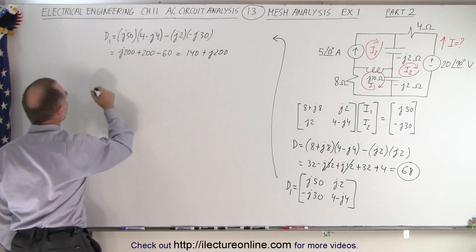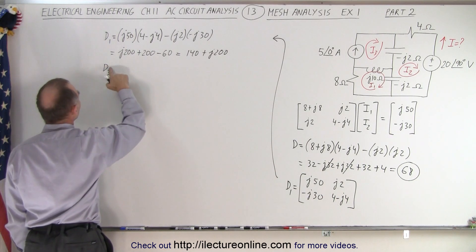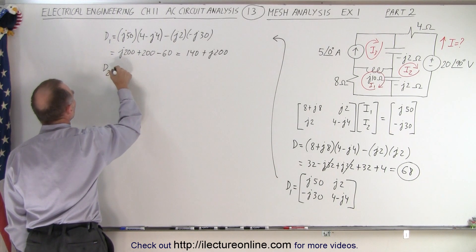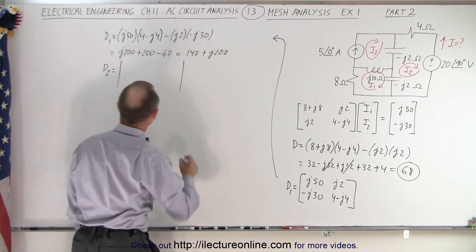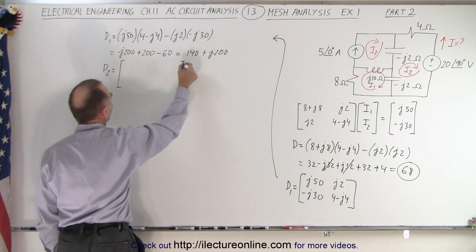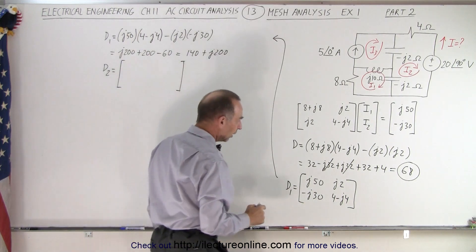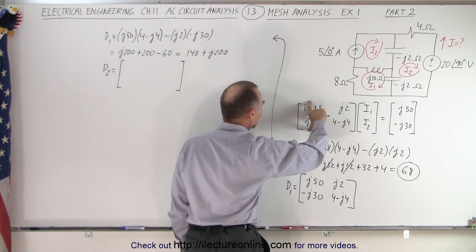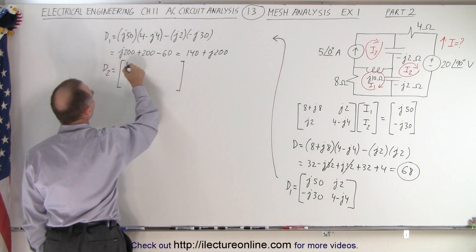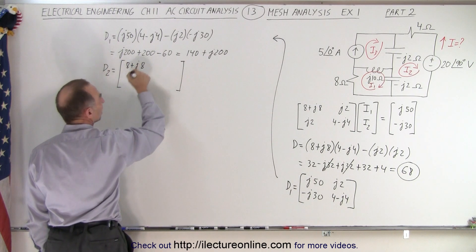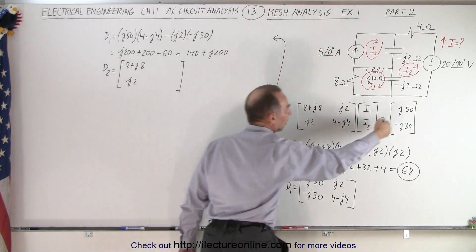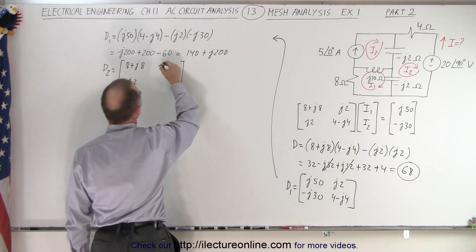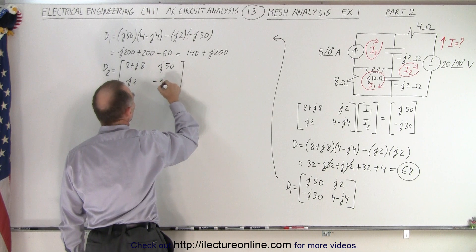And finally we need d3, not d3, but d2. I'm getting ahead of myself, d2, which is equal to the matrix. And go ahead and put our little brackets on it like this. So now what we're going to do is we're going to take these two first terms. We have 8 plus j8 and j2. And now we're going to replace these two by those two. So we end up with j50 and a minus j30.